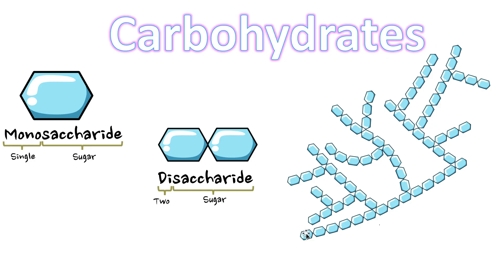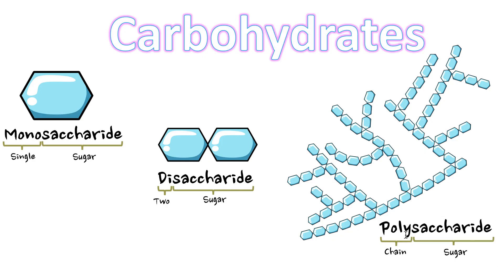When you form a huge structure — anything more than two, so three, four, five, six, up to a thousand — we call these polysaccharides. 'Poly' means chain, so polysaccharide means a chain of sugars. Sometimes they branch in different directions, but the point is it's a connection of a bunch of them. So we have three key terms to know: monosaccharide, disaccharide, and polysaccharide.